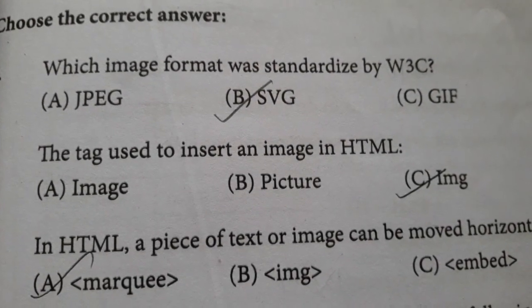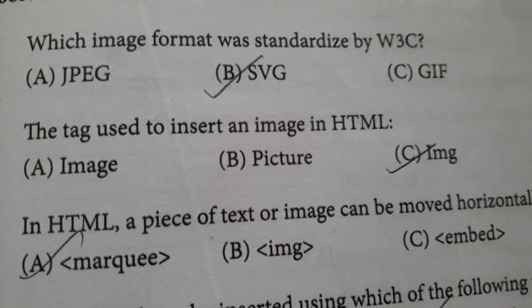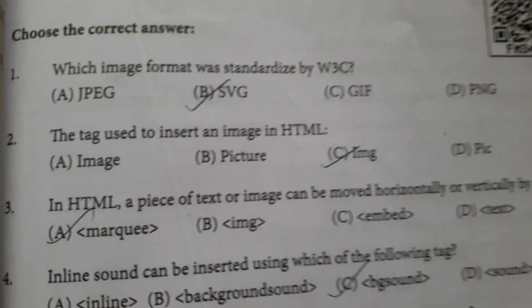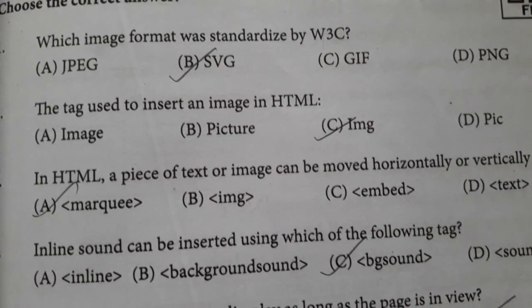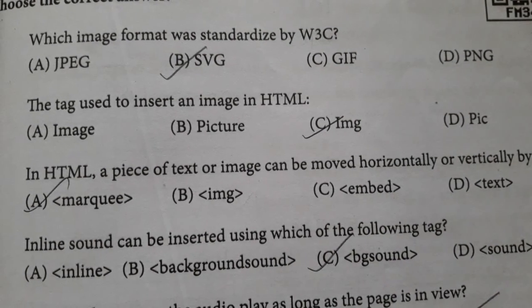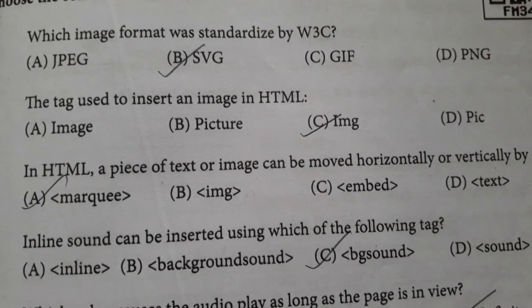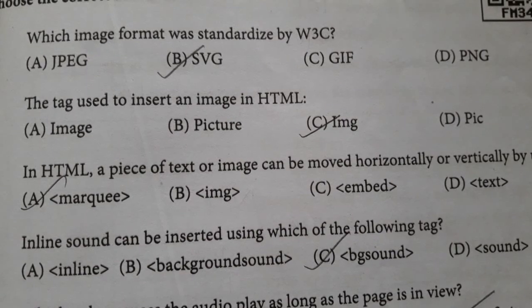Which image format was standardized by W3C? Option A JPEG, Option B SVG, Option C GIF, Option D PNG. Answer is Option B, SVG.